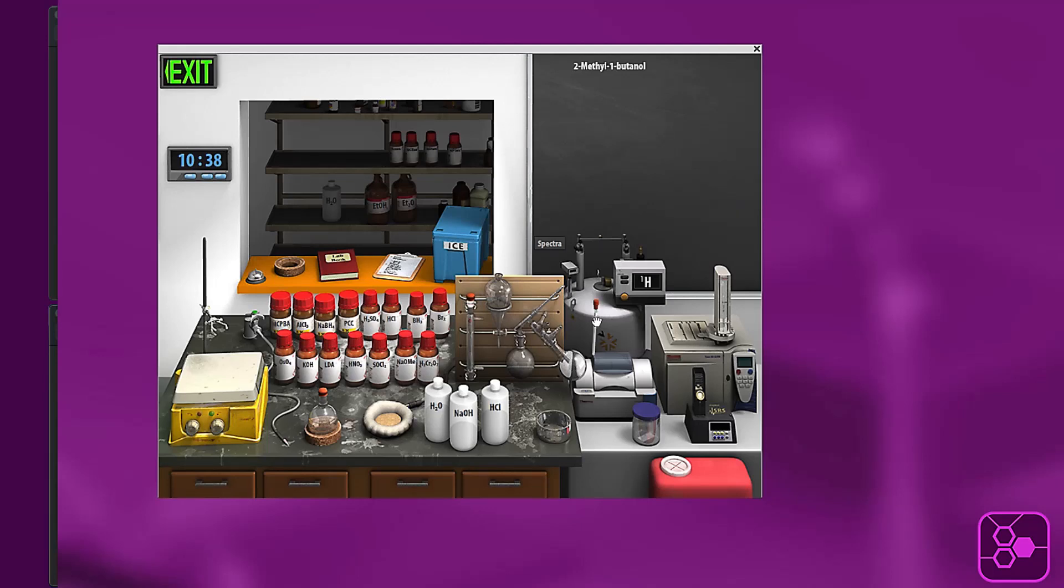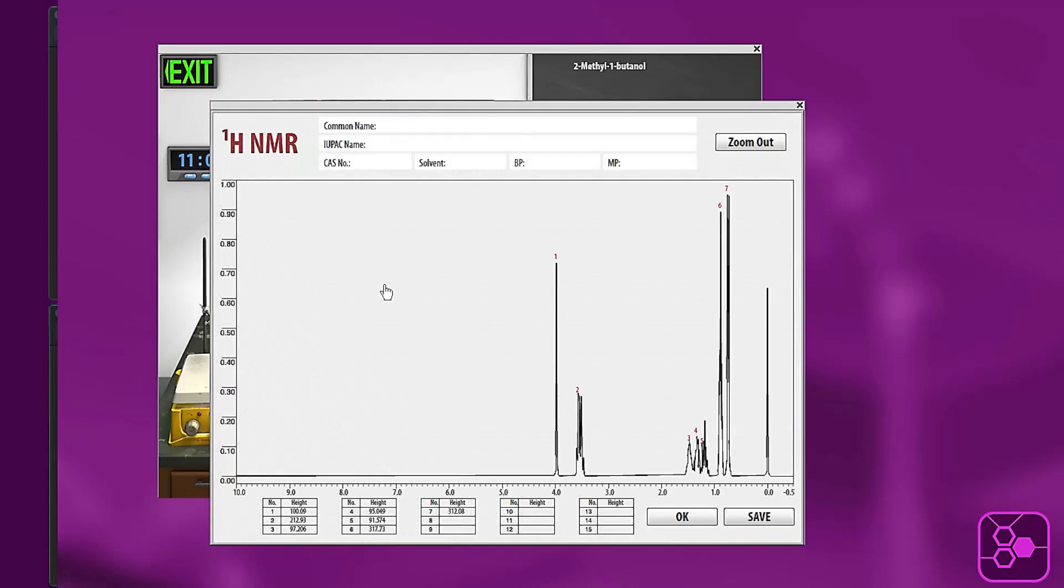So you click on the instrument and it will bring up an NMR tube and you just drag it over to your flask. Once you set it on the flask you should get a spectrum that comes out.